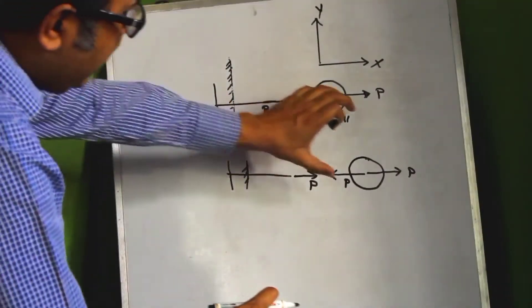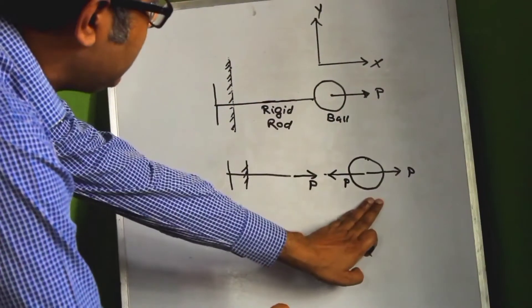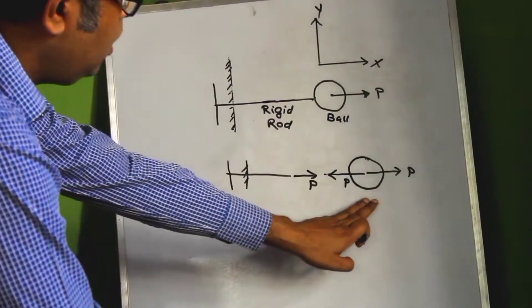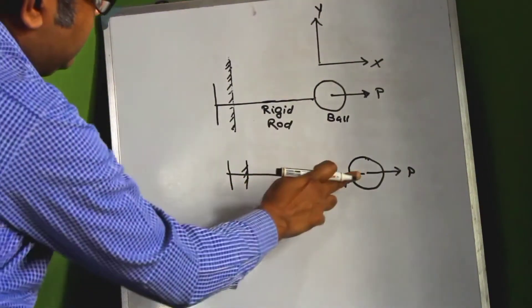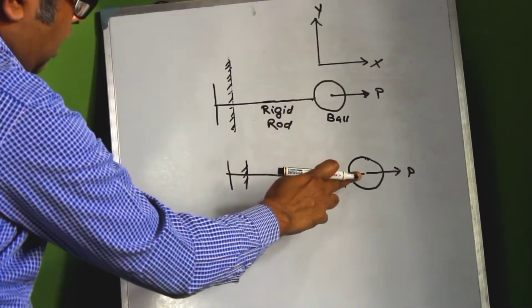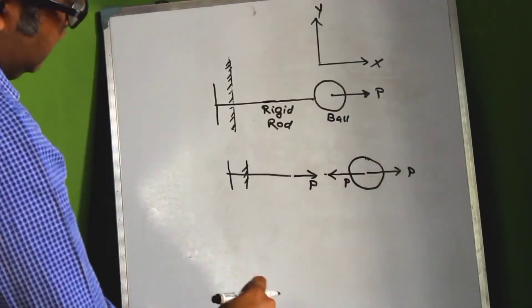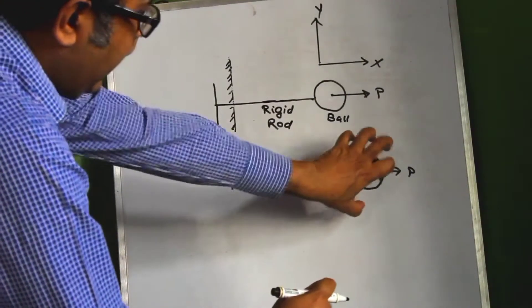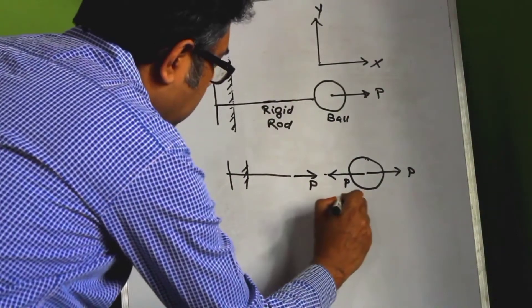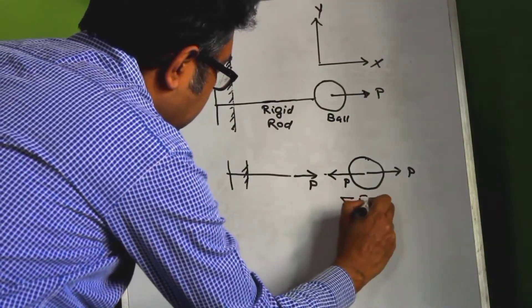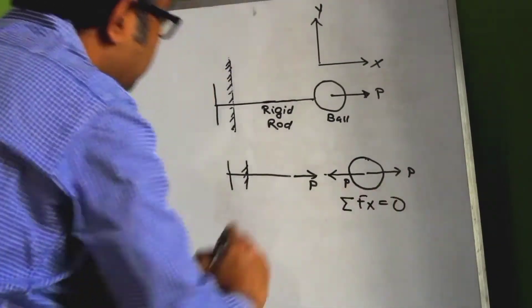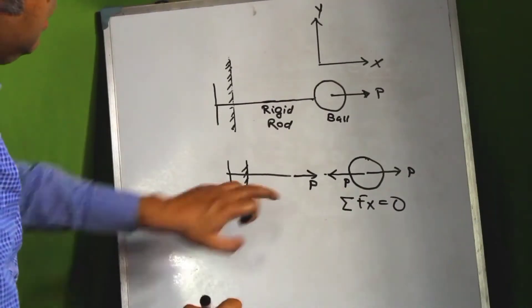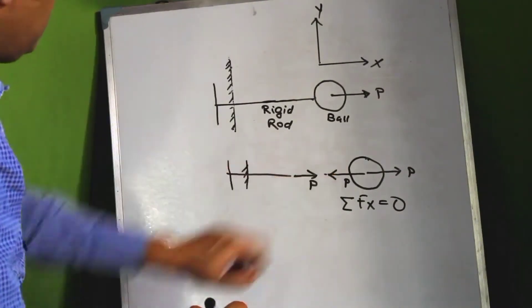So as an equal and opposite reaction, the rod pulls the ball back with the same force. So now look at this free body diagram of the ball. You will see that there are two equal and opposite forces that are acting on the ball.